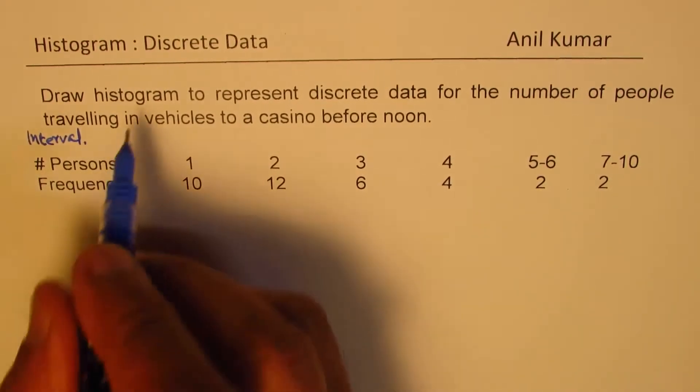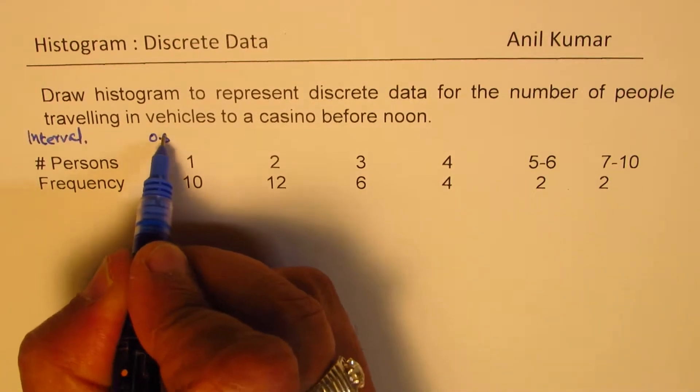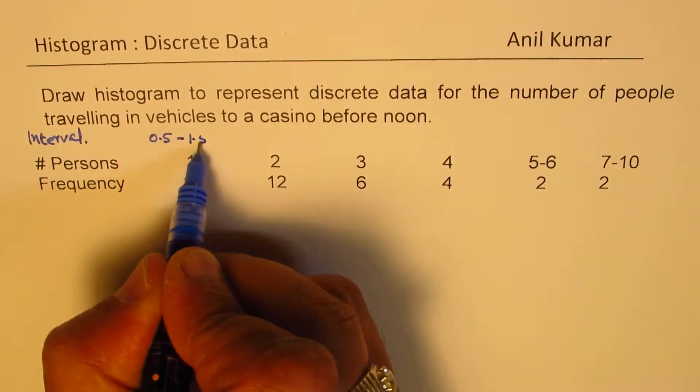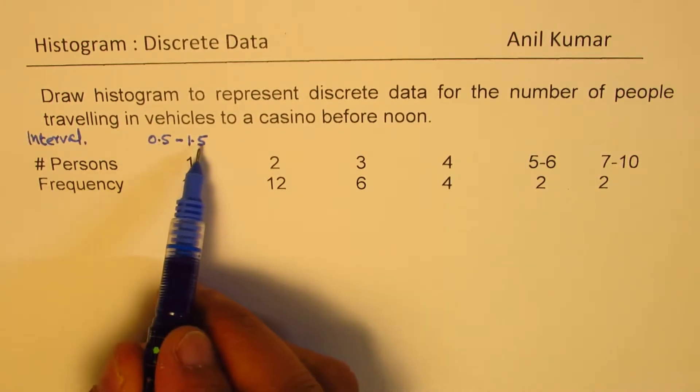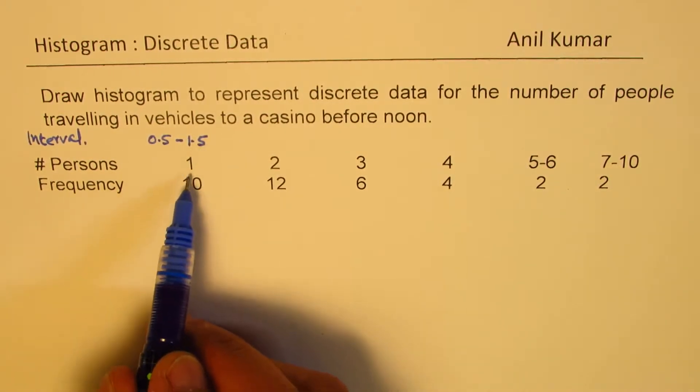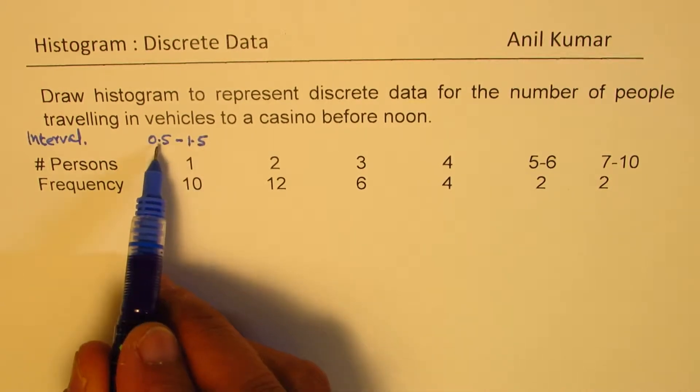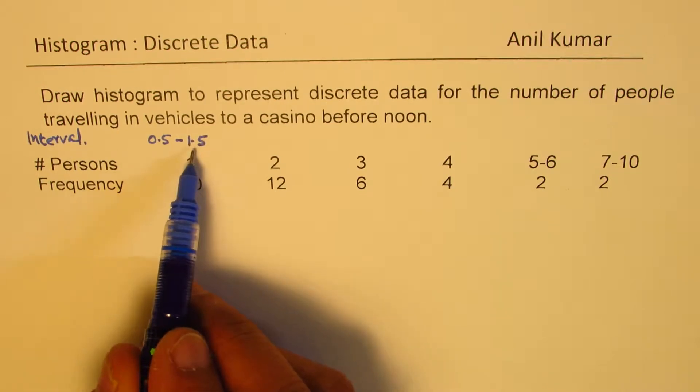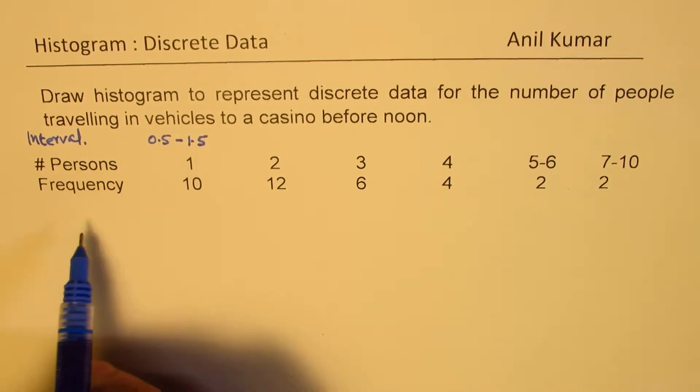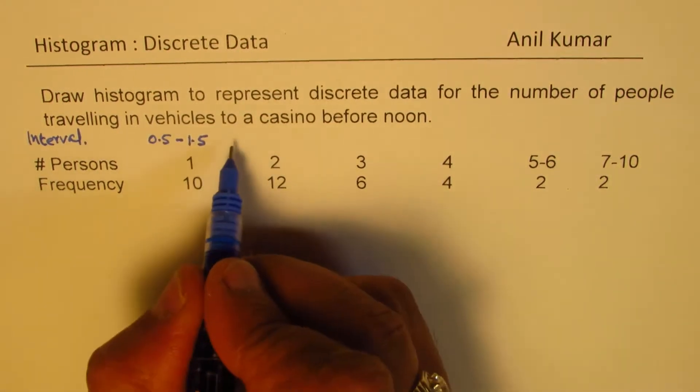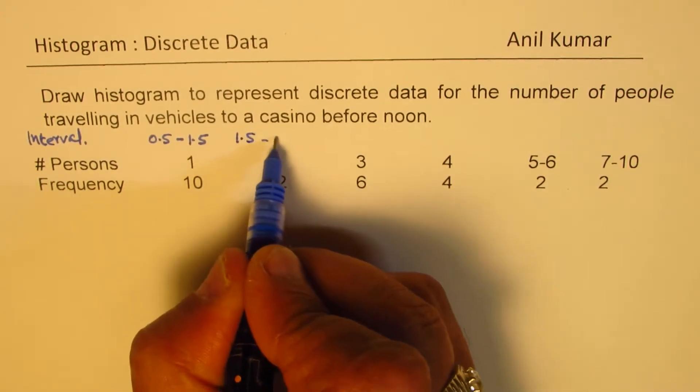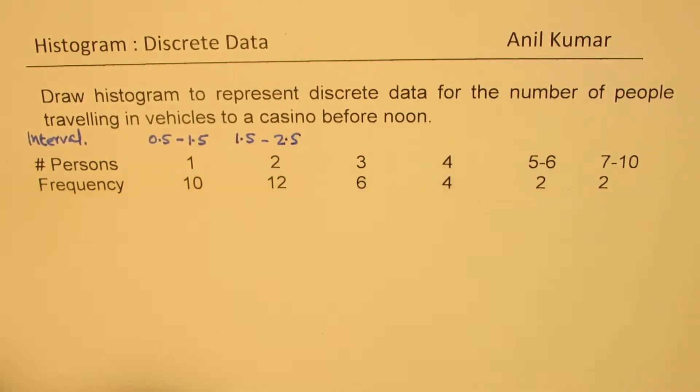For 1, we could choose from 0.5 to 1.5. So where 0.5 is included, 1.5 is not included, then we'll have this number 1 within this interval. So 1 person, an interval will be 0.5 to 1.5. For 2, it will be from 1.5 to 2.5. That means 2 is included.